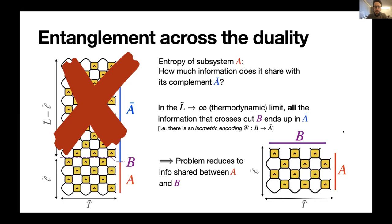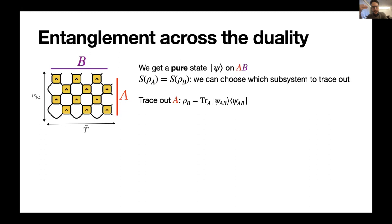So after we get rid of all that, we're left with a much simpler problem where we just have a pure state on this patch of spacetime with dangling legs at both a spatial and temporal edge here, A and B. And that can be analyzed more easily if we use the fact that in a pure state, the entanglement entropy for two complementary subsystems is the same. So we can choose which one to trace out, A or B, in order to obtain the entropy of A, which is what we initially set out to calculate.